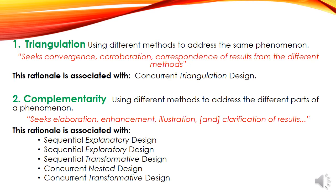In concurrent triangulation, you use both strategies at the same time — gathering quantitative and qualitative data simultaneously. Once you collect the data, you analyze it at the end phase, not at the data collection phase. Complementarity involves using different methods to address different parts of the phenomena, seeking elaboration, enhancement, illustration, and clarification of results.